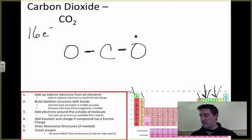And I have 16 total I get to use, so 4, 5, 6, 7, 8, 9, 10, 11, 12, 13, 14, 15, 16. So I've used up all my electrons. Right here, I built my skeleton structure, I used up all my electrons.